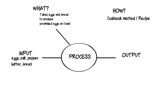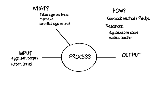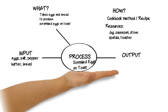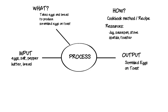The cookbook will tell you that you also need resources such as a measuring jug, saucepan, stove with low heat, wooden spoon or spatula, and a toaster. If you follow the method correctly, you will be able to enjoy the output of delicious scrambled eggs on toast for breakfast — or whenever.